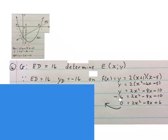Then we make y. We substitute y with minus 16 and now we solve for x. You bring the minus 16 to this side you'll get 2x squared minus 8x plus 6. Now we solve for x.